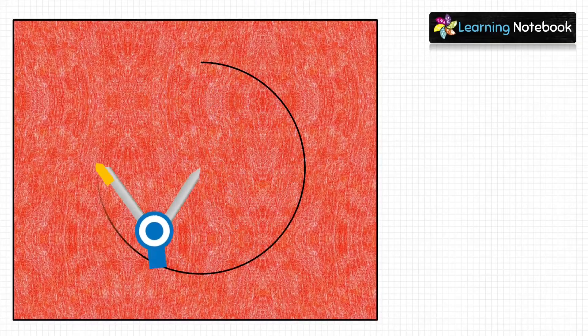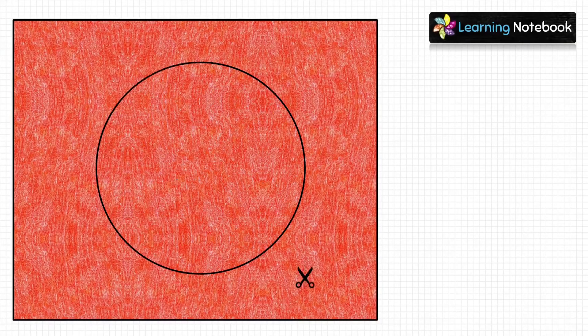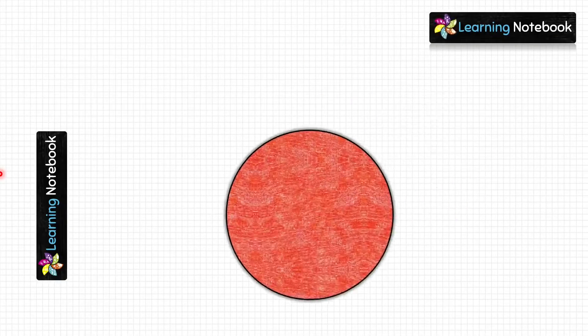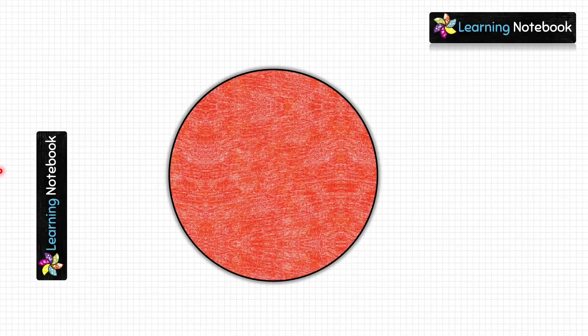Next, take the red colored sheet and draw a circle of 5 centimeters on it, and then cut out this circle. Now take the red circle and fold it vertically as well as horizontally.